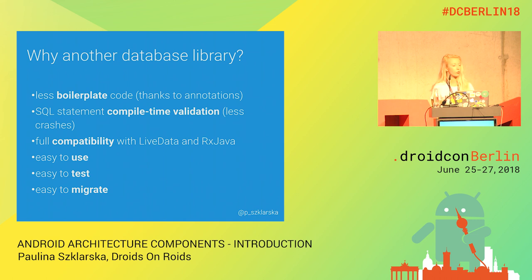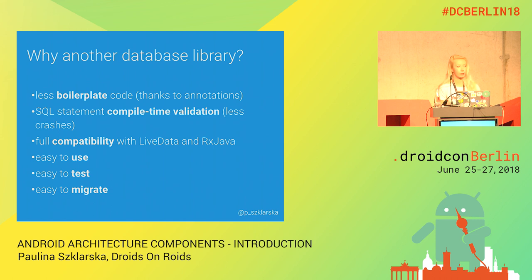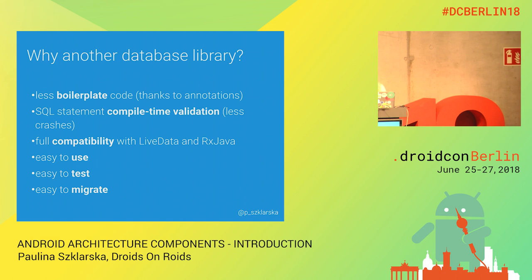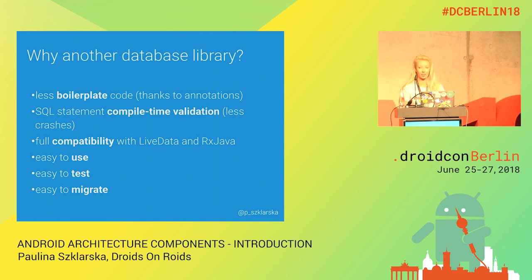We may ask ourselves: why another database library? We already have many solutions like native SQLite, OrmLite, or Realm. So why another one? Firstly, Room is cool because there is barely no boilerplate code — we don't need to write SQL statements on our own, we just use the proper annotations. The second cool thing is that SQL statements are validated during compile time, not runtime, so there will be no runtime exception caused by an SQL typo. The third thing is full compatibility with LiveData and RxJava. And Room is just easy to use, test, and migrate.